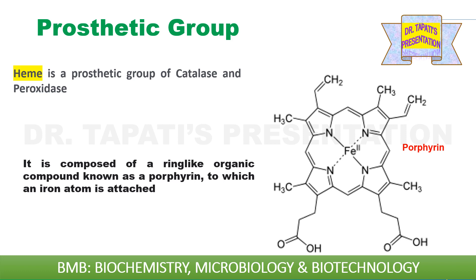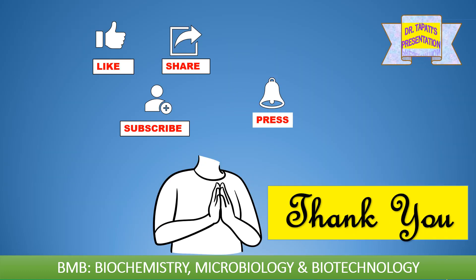An example of a prosthetic group — that is, tightly bound to the enzyme — is heme. Heme is a prosthetic group of catalase and peroxidase enzymes. It is composed of a ring-like organic compound known as porphyrin, to which one iron atom is attached. This iron-porphyrin complex is called heme, and it is required for catalase and peroxidase enzymes. Thank you very much for watching this video.